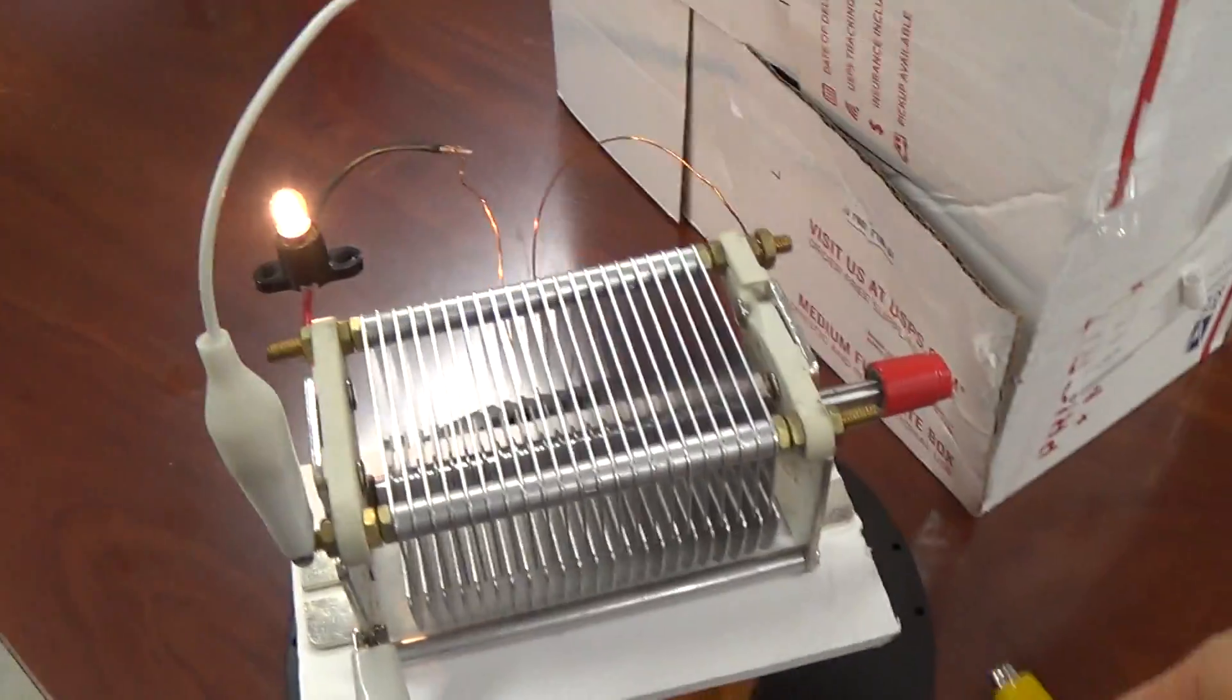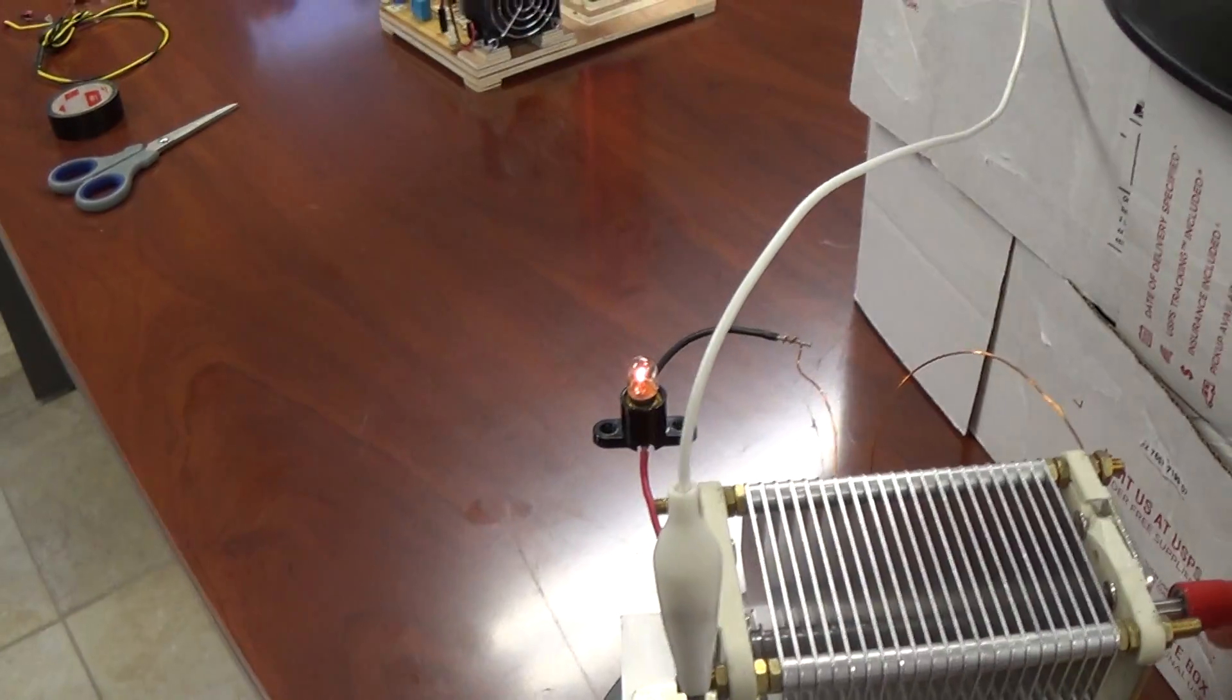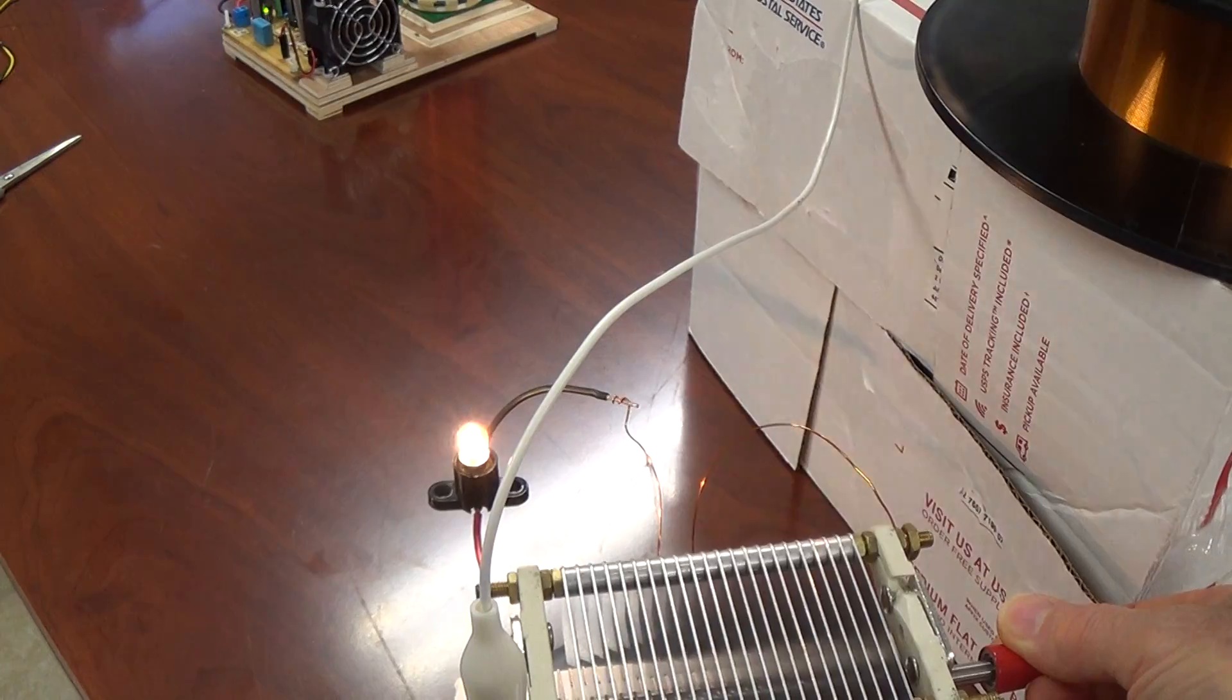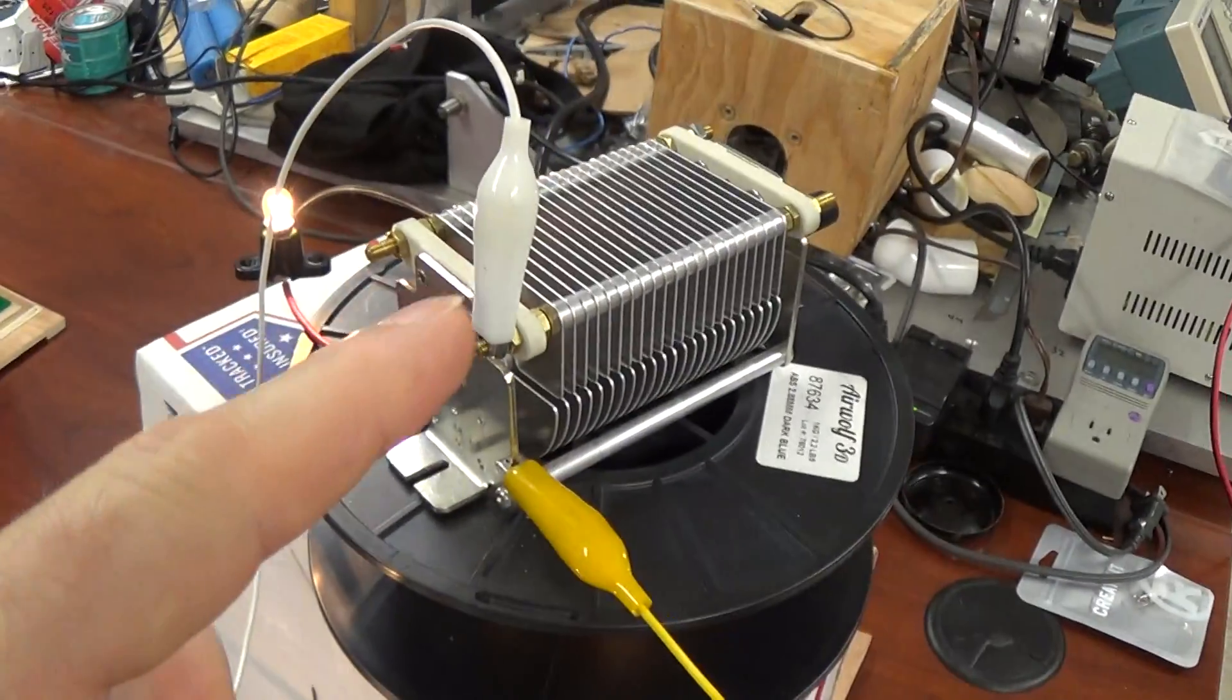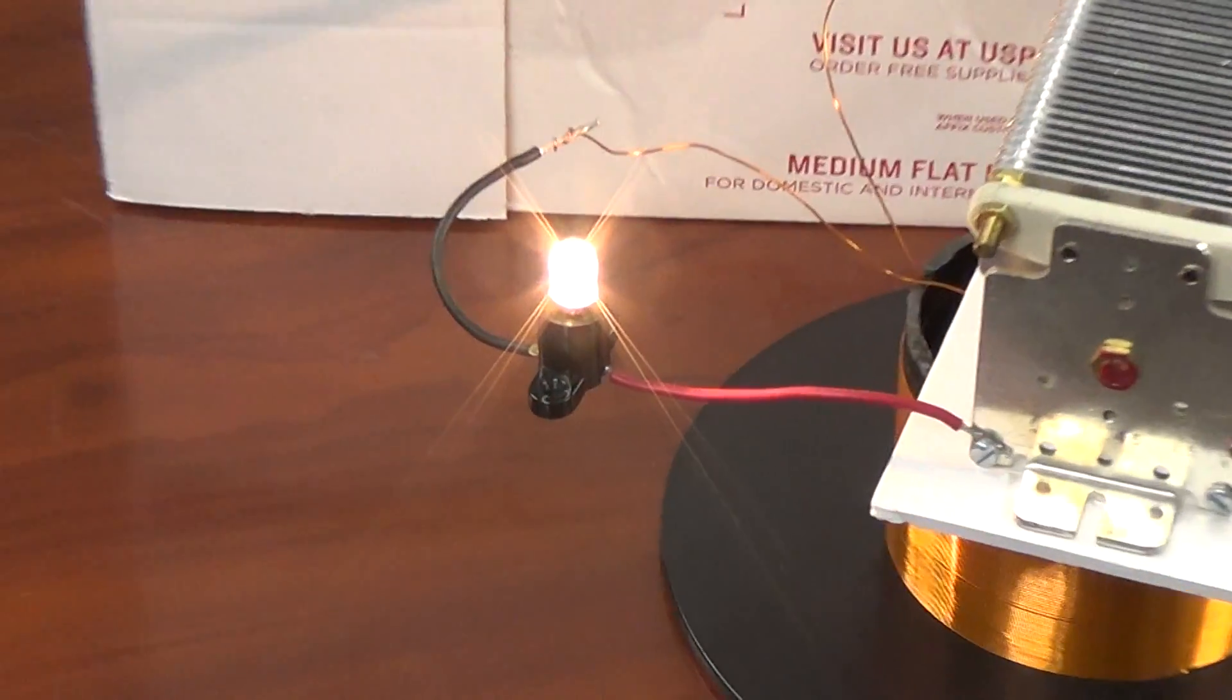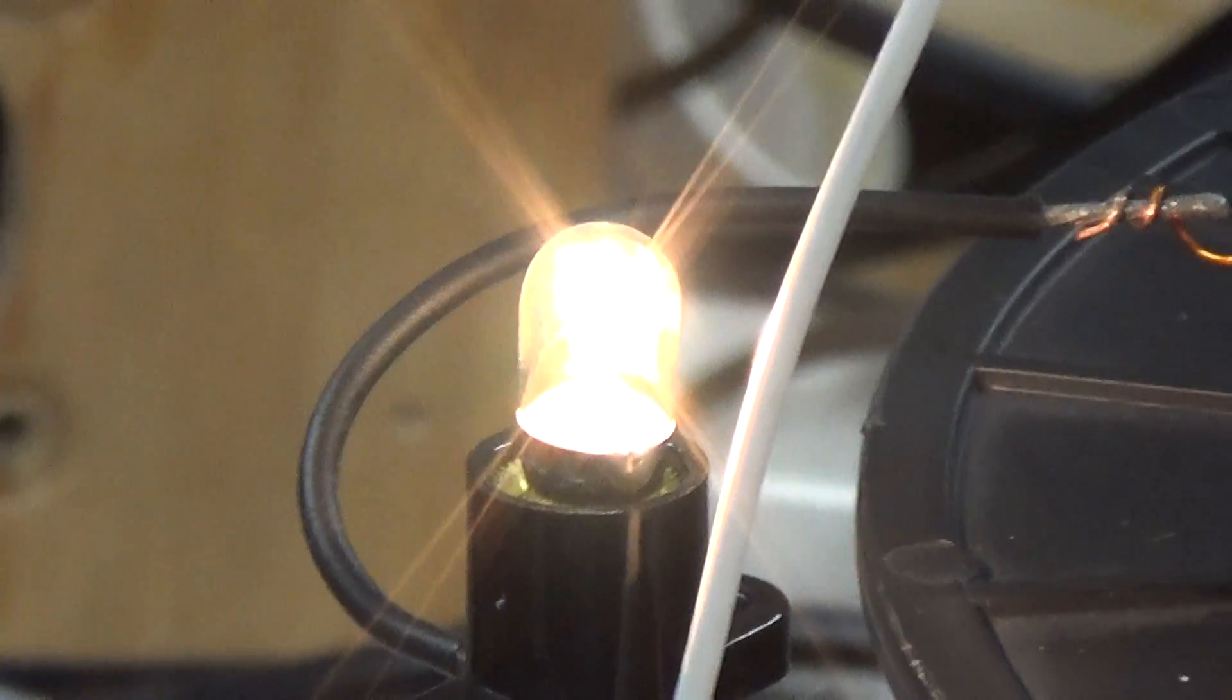Now I'll add the second load. What I have to do now is just slightly retune. Very fussy. These are variable air capacitors that I have on top there, and the circuit is working best with those. Now if we look at our bulb there, that is our first bulb. As you can see it hasn't diminished. And there is our second bulb. As you can see it is as bright as the first one.